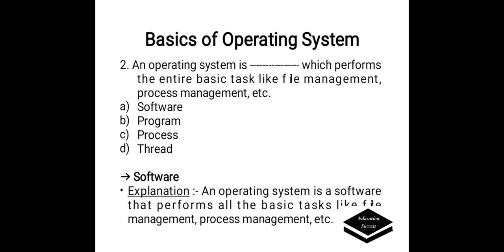An operating system is ___ which performs the entire basic tasks like file management, process management, etc. Options are A. Software, B. Programme, C. Process, D. Trade. Correct answer is option A, Software. An operating system is a software that performs all basic tasks like file management and process management.